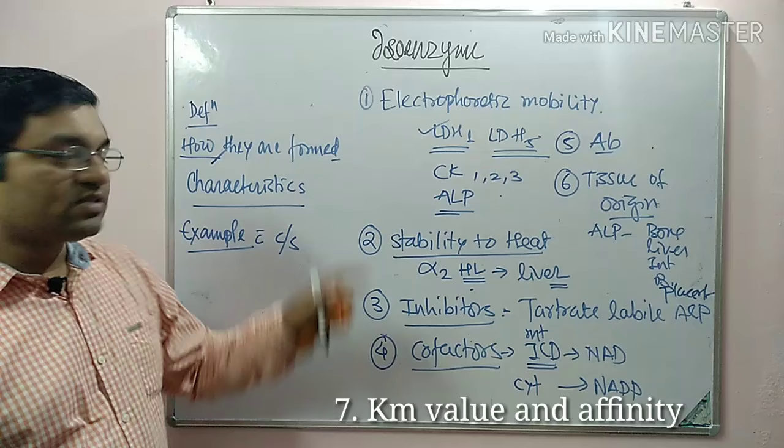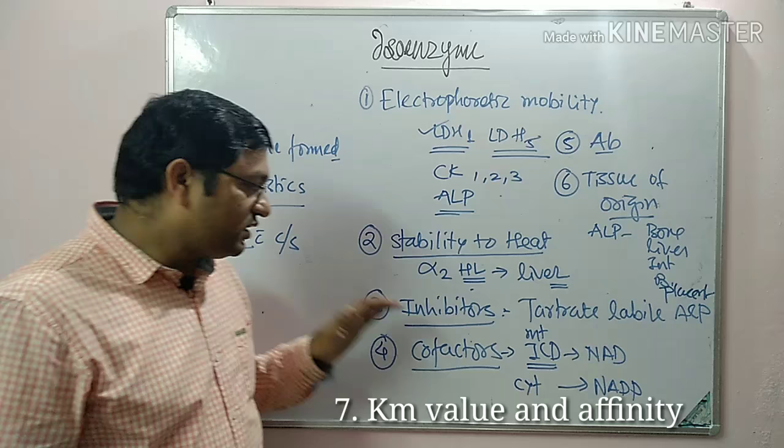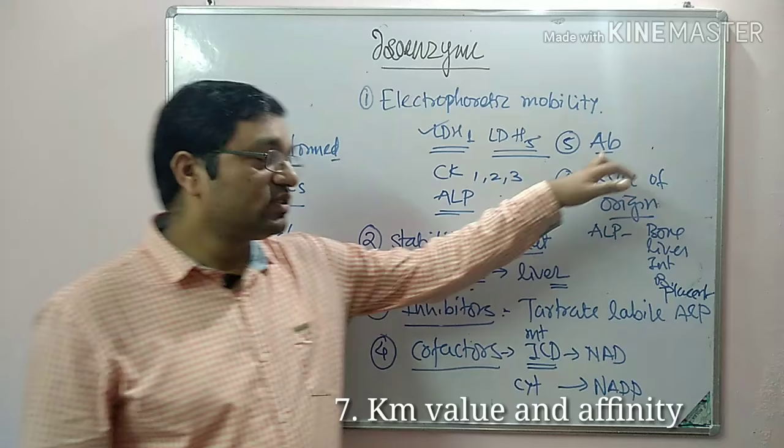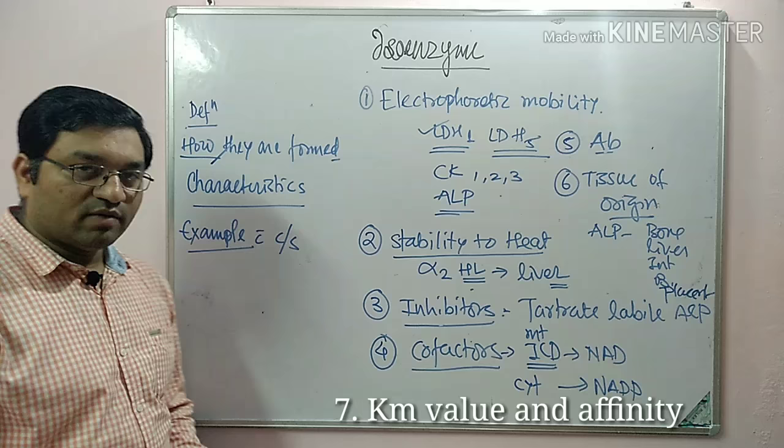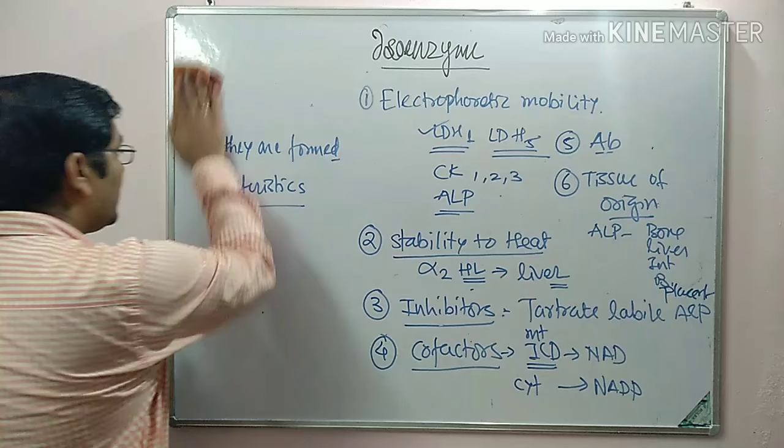So isoenzymes differ in electrophoretic mobility, stability to heat, sensitivity to inhibitors, different cofactors required, sensitivity to antibodies, and tissue of origin. Now coming to the examples — there are three classical examples: LDH, creatine phosphokinase or creatine kinase, and alkaline phosphatase.